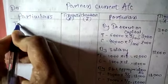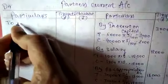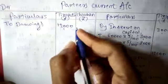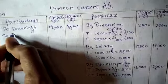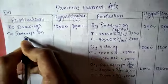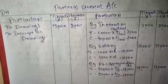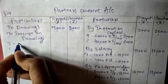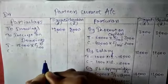Now on the debit side, there are only two entries: drawings and interest on drawings. Drawings are ₹12,000 for Tirupati and ₹8,000 for Chauhan. Interest on drawings is not given directly; we must calculate it. Tirupati's drawings are ₹12,000 at 5% interest, so 10% would be ₹1,200, meaning 5% is ₹600.